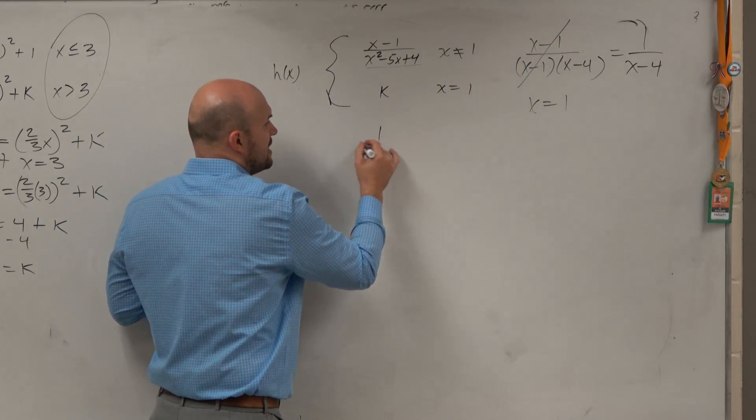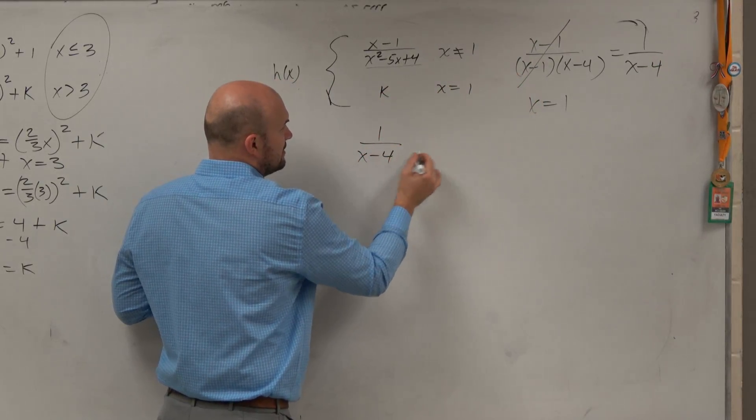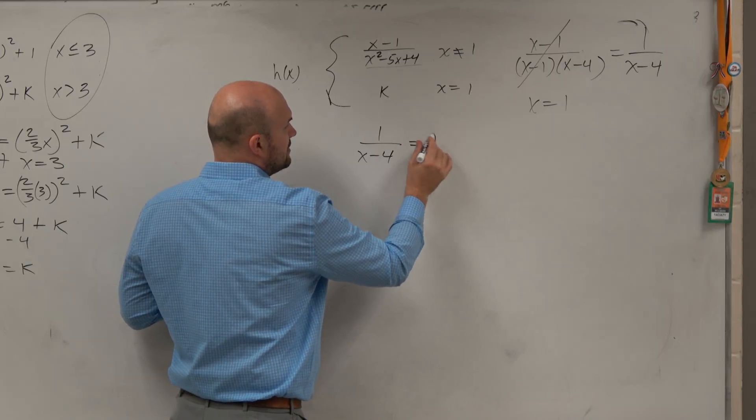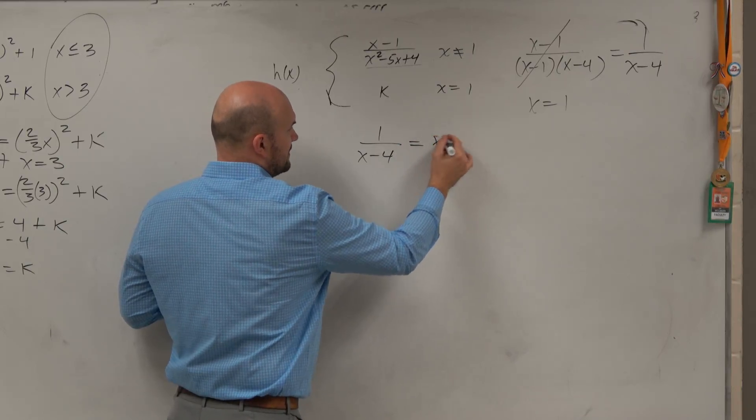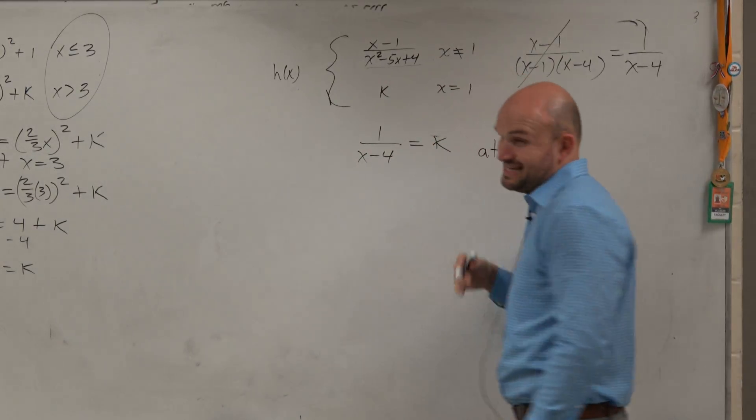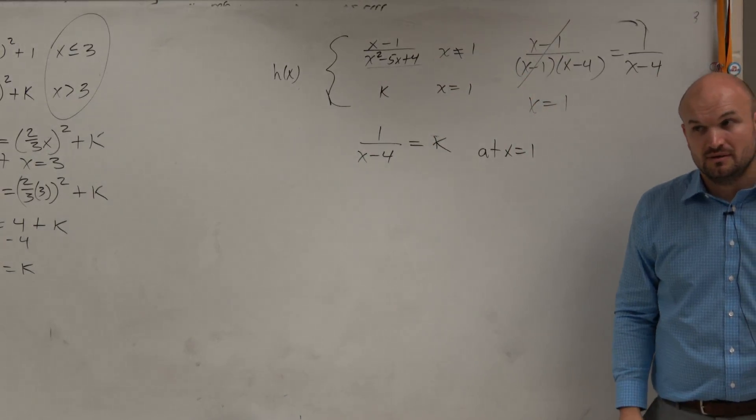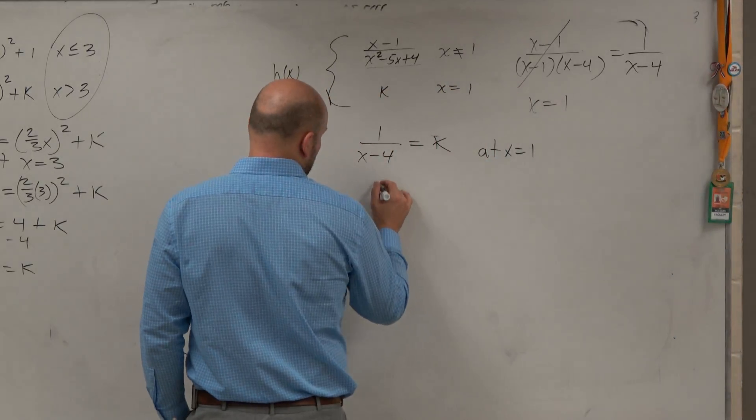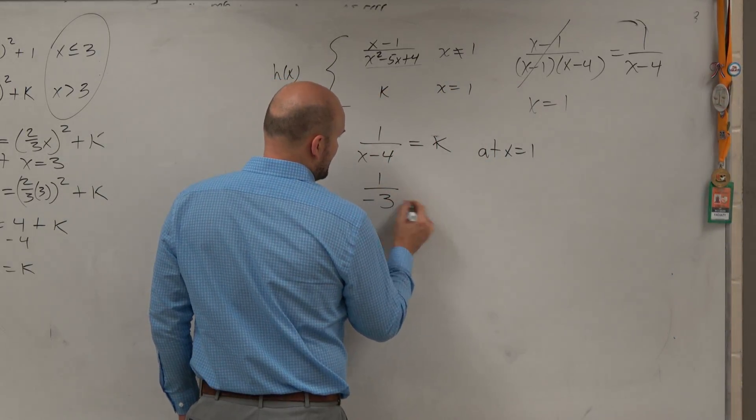So now, could I set 1 over x minus 4 and then equal that to k? And now, can I plug in x equals 1? Now, can I plug in 1? Yes. Yes. And when you go ahead and plug in 1, you get 1, negative 3.